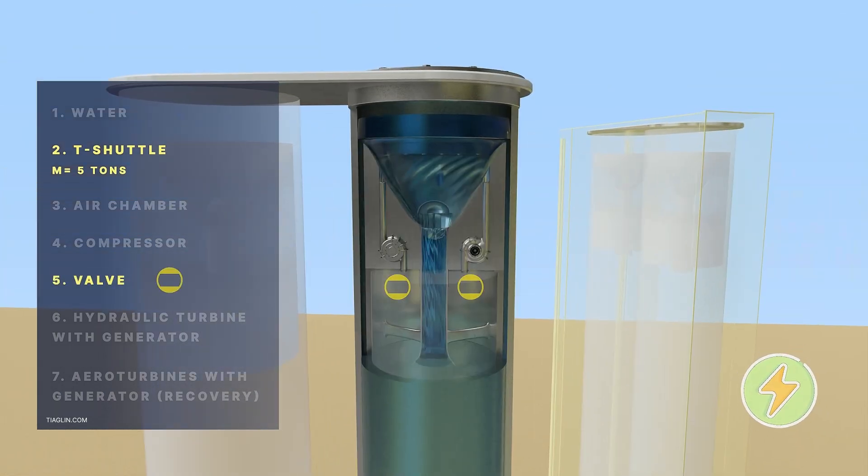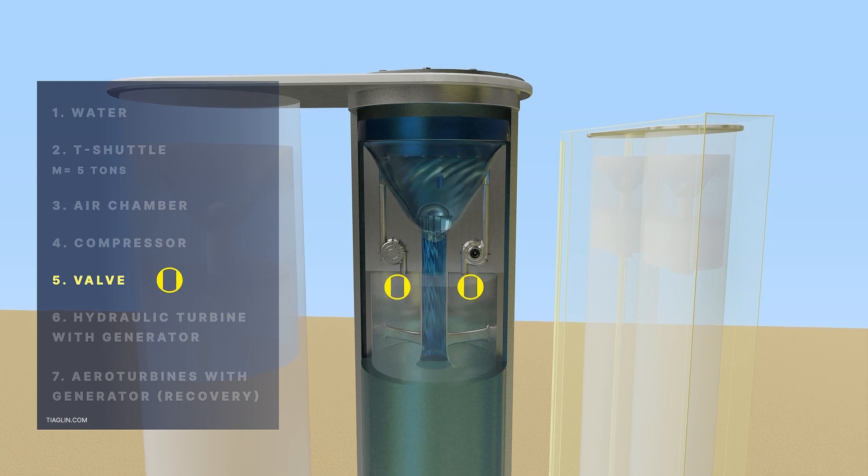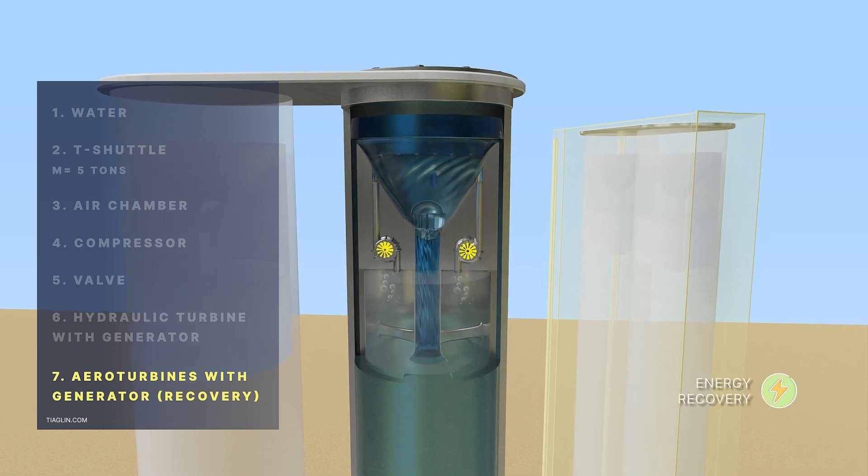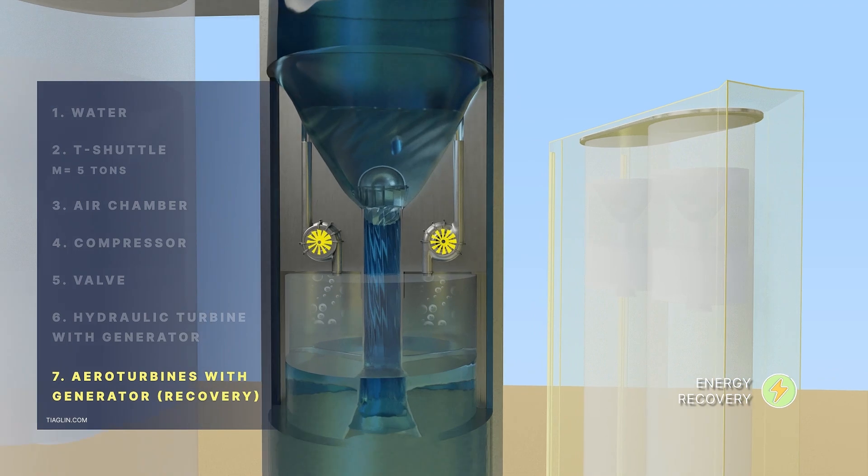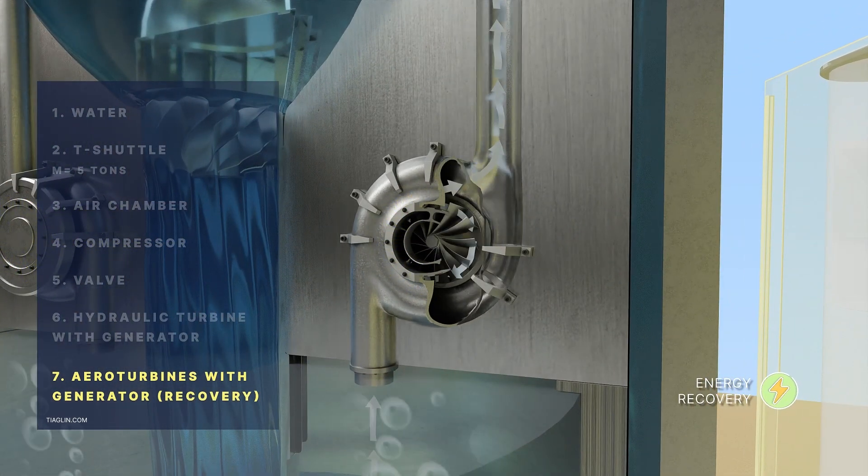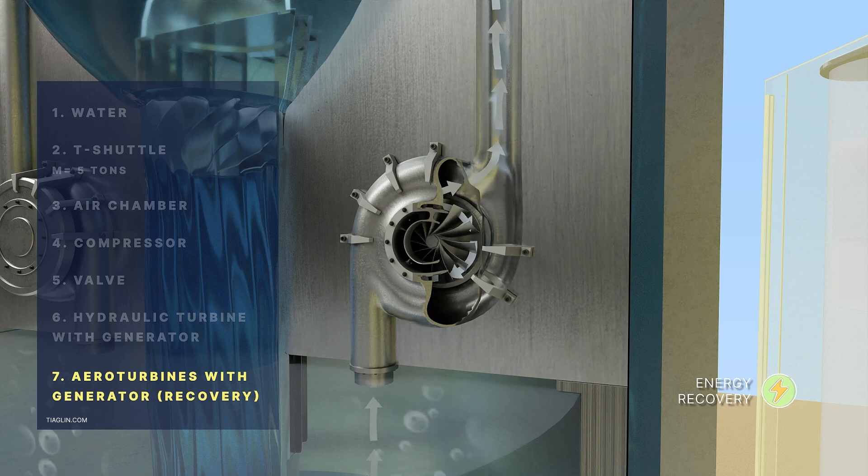When the platform reaches the upper position, the valves are open for releasing air. The air passing through the channel falls on the blades of an additional turbine and rotates it, which in turn causes the generator to generate electricity.